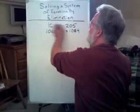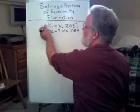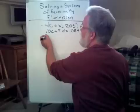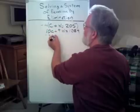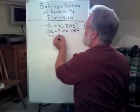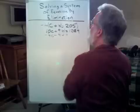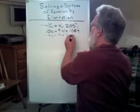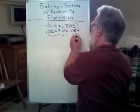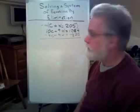Now I have negative 4 times C is minus 4C. Negative 4 times positive W is minus 4W. And negative 4 times 205, that would be negative 820. Remember, that's a negative 4.